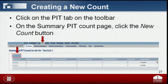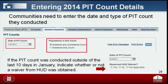To start your PIT data reporting on HDX, begin by selecting the blue New Count button in the top left corner. Prior to entering PIT population and subpopulation data, you must provide background information on your COC's count, including the date the PIT count was conducted, the type of PIT count conducted in 2014 — whether sheltered and unsheltered or sheltered only — and if the count was conducted outside of the last 10 days of January, indicate whether a waiver was provided by HUD. The waiver question will only appear if a count date outside of the last 10 days of January is entered.